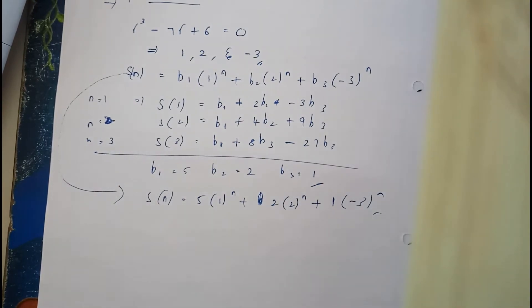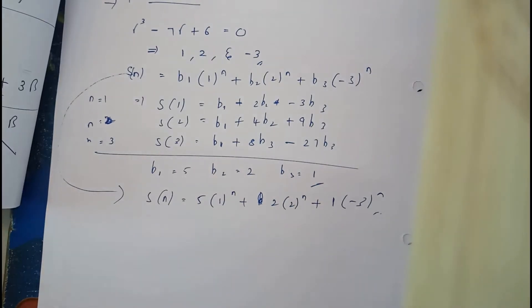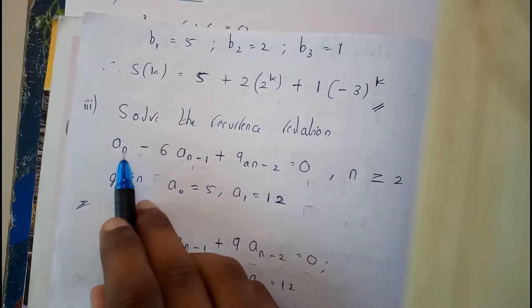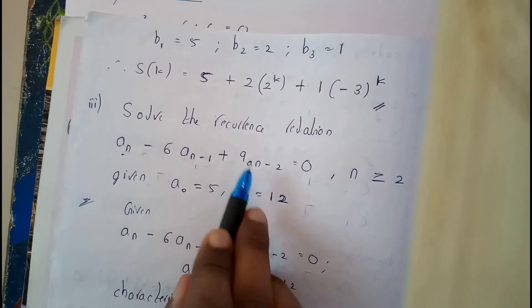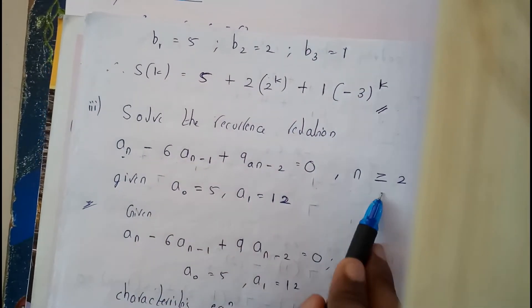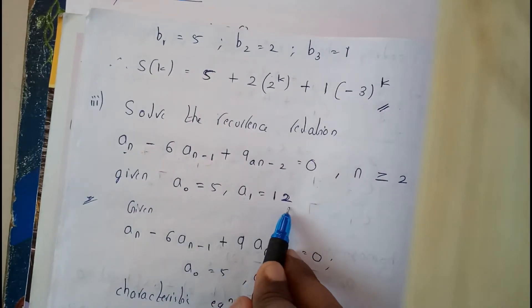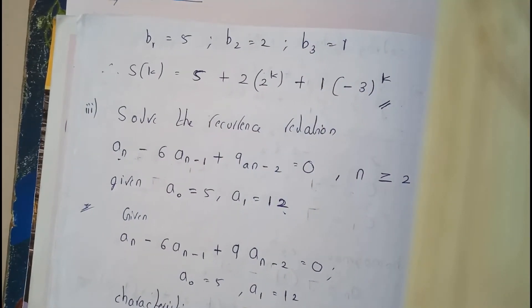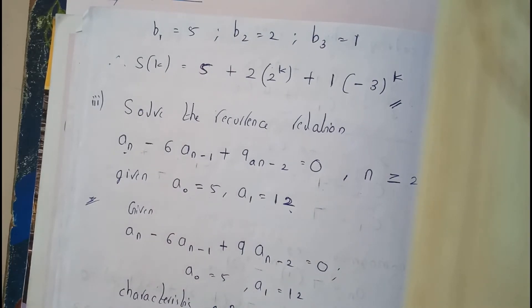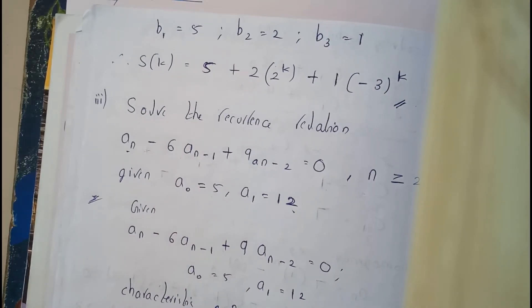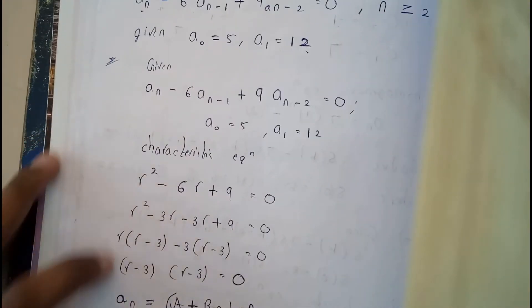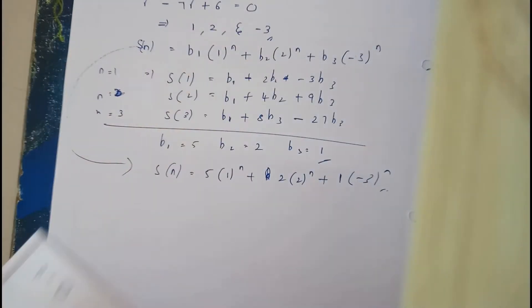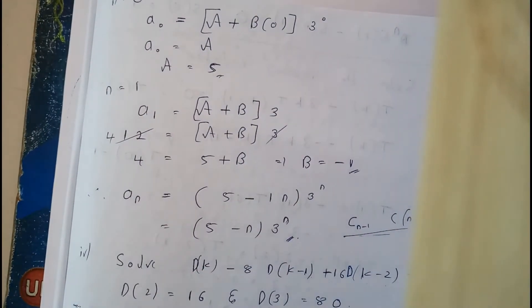Now note down the next problem to solve. The question is: a(n) − 6·a(n−1) + 9·a(n−2) = 0, for n ≥ 2, where a(0) = 5 and a(1) = 12. This is similar to the first video's problem with two roots. You find the characteristic equation, the homogeneous solution, substitute n = 0 and n = 1 to find coefficients a and b, and write the final equation.